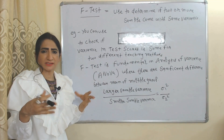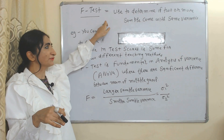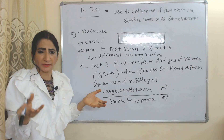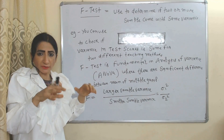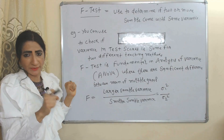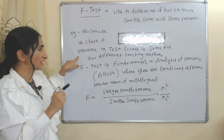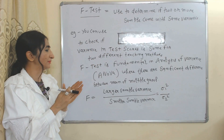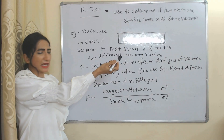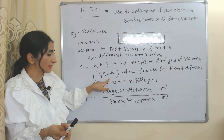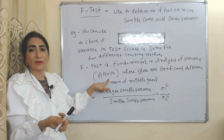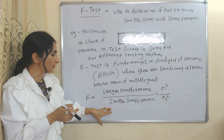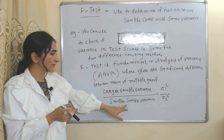F test: variance in samples is possible and quite common. We use the F test to determine if two or more samples come from populations with the same variance. For example, we use the F test to check if variance in test scores is the same for students using different teaching methods. The F test is fundamental in the case of Analysis of Variance (ANOVA), where it is used to know significant differences between means of multiple groups. The main formula is: larger sample variance divided by smaller sample variance.